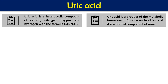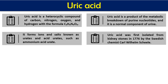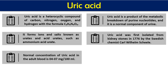Uric acid forms ions and salts known as urates and acid urates, which can precipitate in our body, ultimately leading to crystals. This causes gout or sometimes kidney stones and other associated conditions. Uric acid was first isolated from kidney stones in 1776 by the Swedish chemist Karl Wilhelm Scheele.